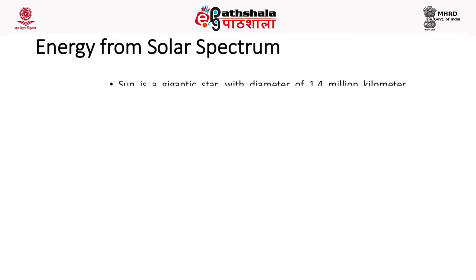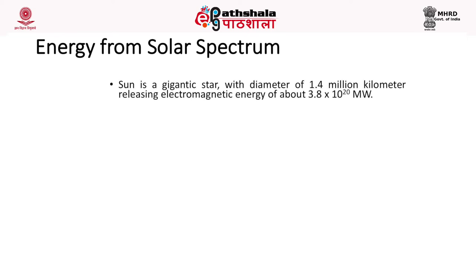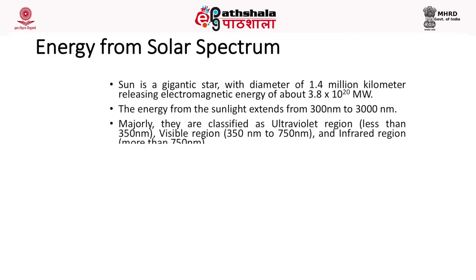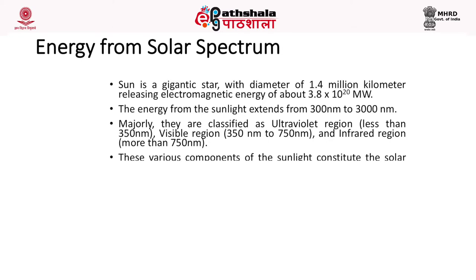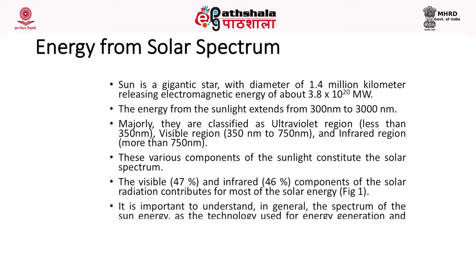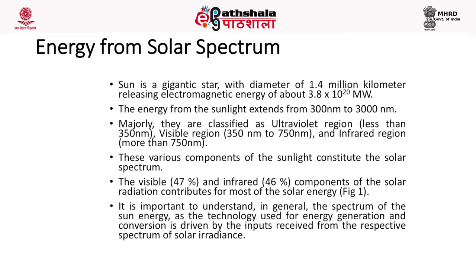The sun is a gigantic star with a diameter of 1.4 million km which releases electromagnetic energy of about 4 × 10²⁰ megawatt. This energy extends from the wavelength 300 nanometer to 3000 nanometer, classified as the ultraviolet region (less than 350 nm), visible region (350 to 750 nm), and infrared region (more than 750 nm), as seen in the solar spectrum.